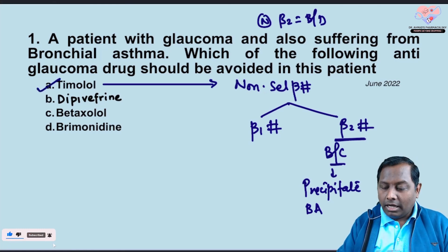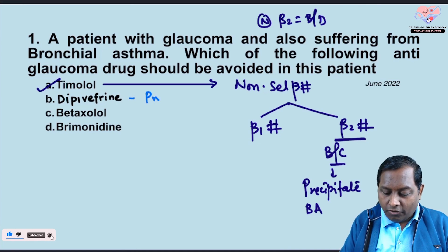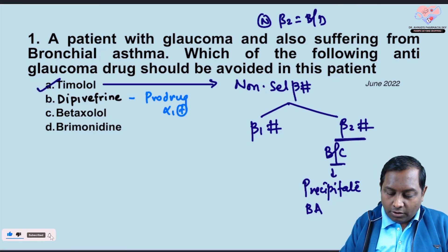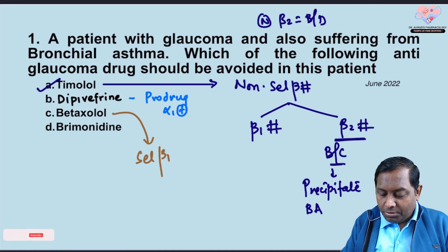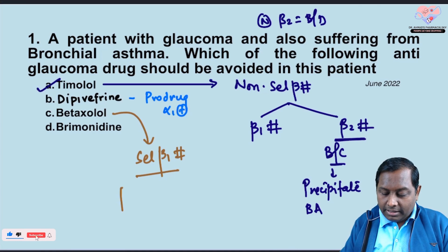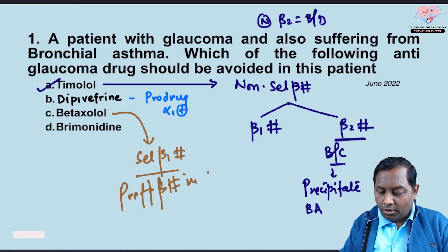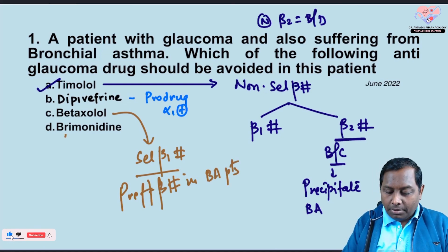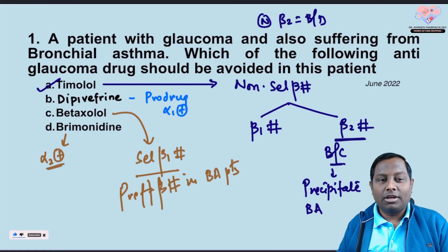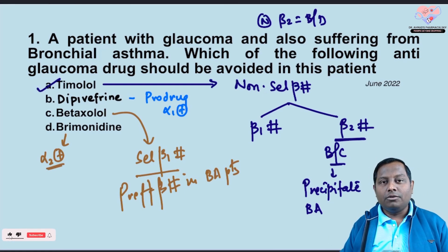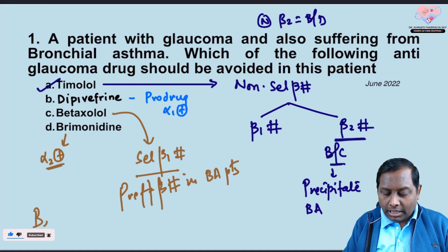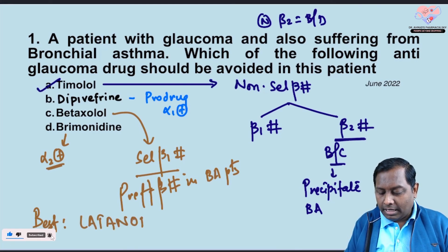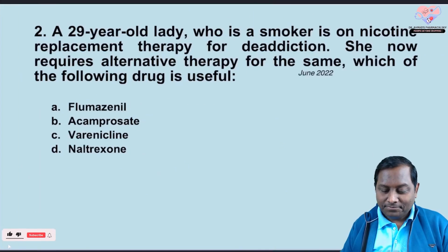Timolol should be avoided. Dipivefrine is a pro-drug of epinephrine and an alpha-1 agonist — it will not precipitate bronchial asthma. Betaxolol is a selective beta-1 blocker and is actually the preferred beta blocker in asthma patients. Apraclonidine and brimonidine are alpha-2 agonists and also safe. The overall best drug for a bronchial asthma patient is latanoprost or bimatoprost — PGF2-alpha analogs.